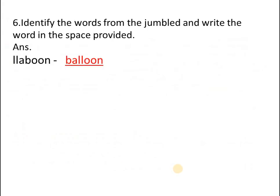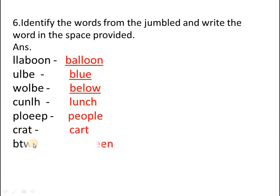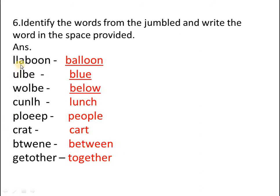Now you have to identify the words from the jumble and write the word in the space provided. On the right side you can see words with letters jumbled. If we put these letters in proper order, there will be a meaningful word. For example: b-a-l-l-o-o-n is balloon, u-l-b-e is blue, w-o-l-b-e is below, c-u-n-l-h is lunch. Then: people, cart, between, together. That is how we put jumbled letters in proper order to make a meaningful word.